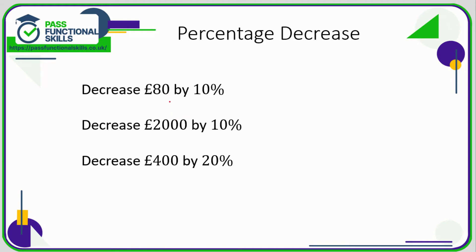A decrease is just the same except you're subtracting. 10% of 80 is 8 pounds, so we're taking 8 pounds off to get 72 pounds. 10% of 2000 is 200, so 2000 take away 200 is 1800 pounds. 20% of 400 — 10% is 40 so 20% is 80 — take off 80 to get 320. It's the same as an increase except you subtract from the total.